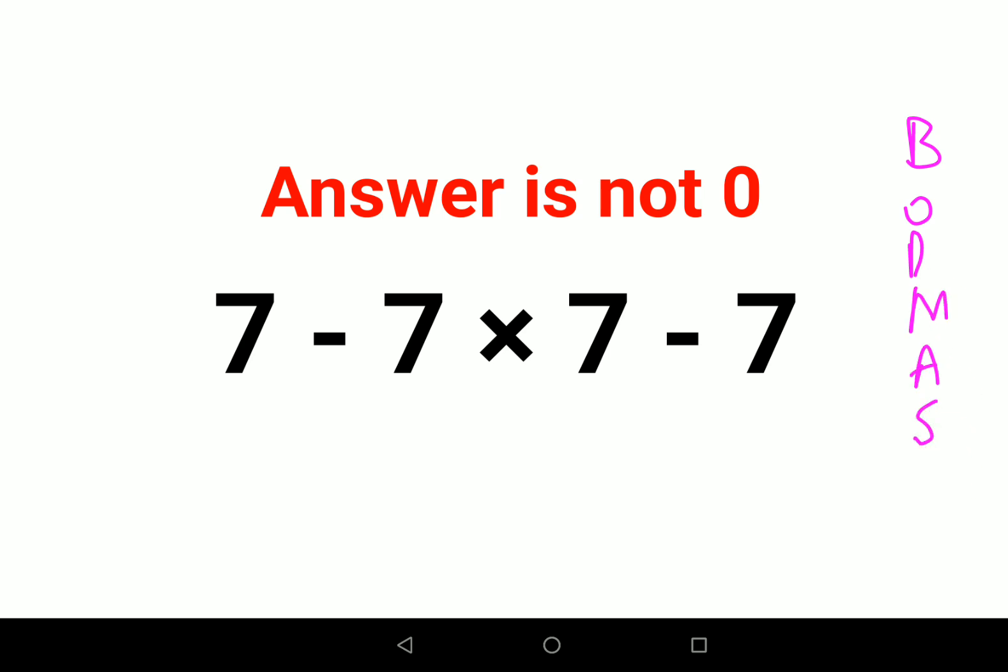Now, BODMAS clearly says that division and multiplication has to be done before addition or subtraction. So here the question changes to 7 minus, will remain as it is, and minus 7 into 7 gets you what? Minus 49. And this minus 7 will remain as it is.